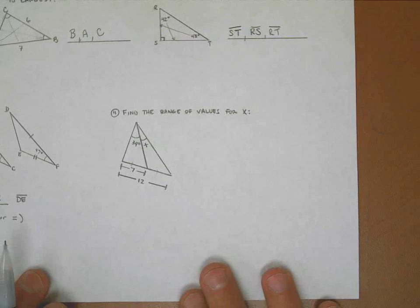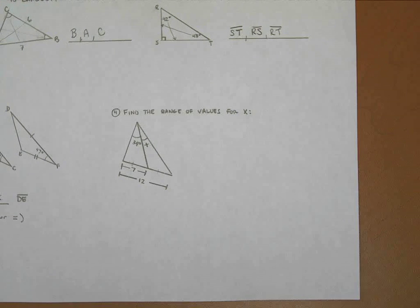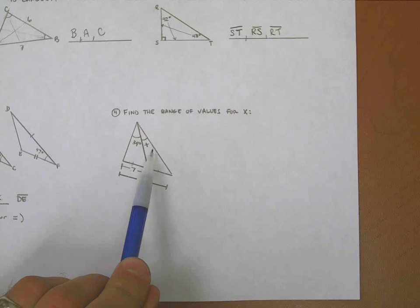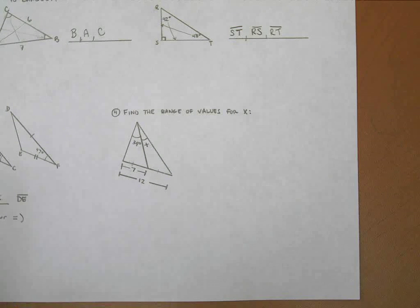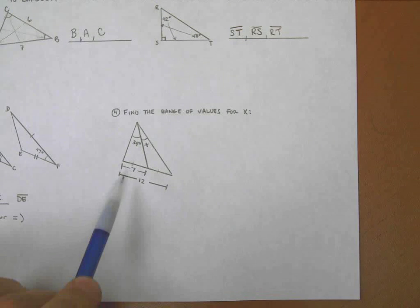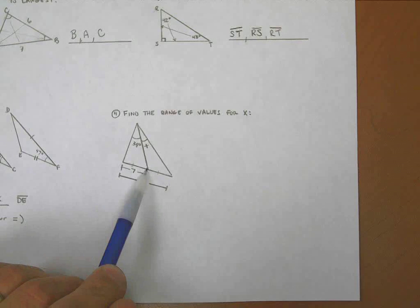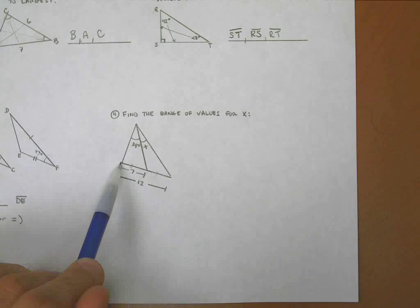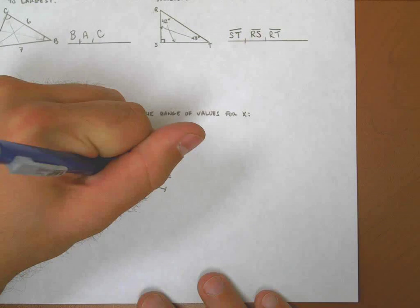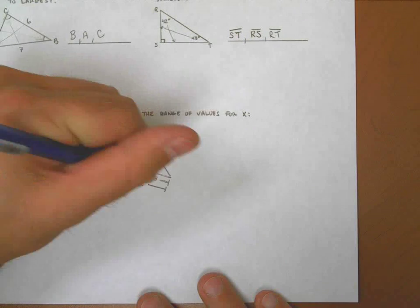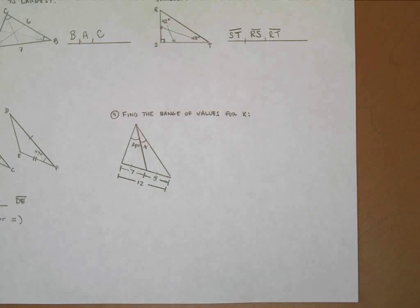Last example might say something along the lines of this: find the range of values for X. What in the world is going on here? See, what they're saying is, if X is an angle here, what values could I put in for X that would be reasonable, that would make the picture make sense? Pictures are not drawn to scale, by the way. If I knew that this side length was 7, and I know that the total was 12, I could probably conclude that what was left over was a 5 over here. That would be my first step: fill in the missing information.